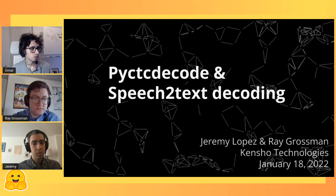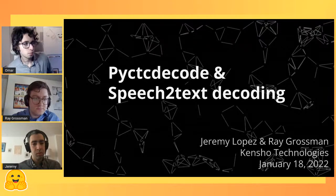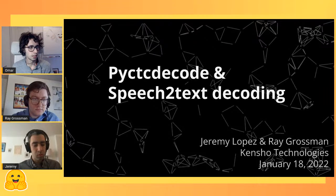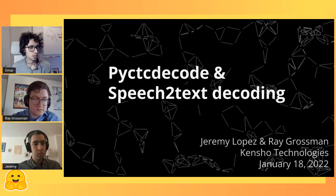As a quick introduction to them: Raymond Grossman works as an ML engineer at Kensho Technologies. He specializes in speech and natural language domains. Before working at Kensho he studied math at Princeton and was an avid Kaggler.